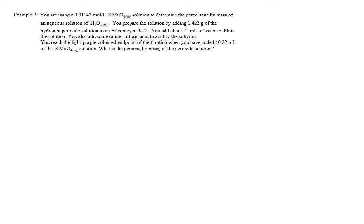The situation is that you're using a 0.1143 mole per liter potassium permanganate solution to determine the percentage by mass of an aqueous solution of hydrogen peroxide. You prepare the solution by adding 1.423 grams of the hydrogen peroxide solution to an Erlenmeyer flask. You add about 75 mls of water to dilute the solution and some dilute sulfuric acid to acidify the solution. You reach the light purple colored endpoint of the titration when you have added 40.22 mls of the potassium permanganate solution. What is the percent by mass of the peroxide solution?